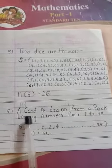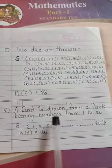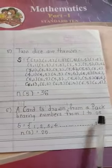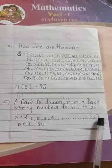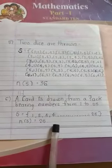A card is drawn from a pack bearing numbers from 1 to 25. S is equal to 1, 2, 3, 4, 5, and so on. N of S is equal to 25.